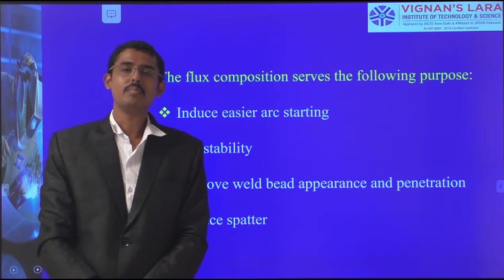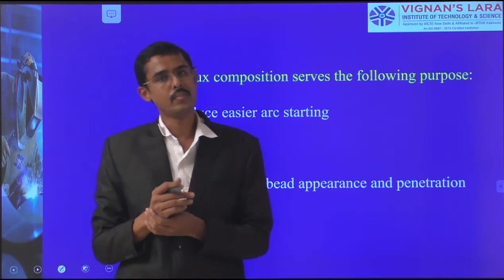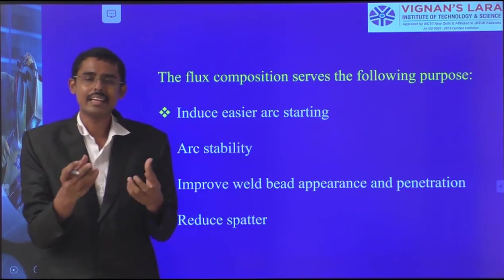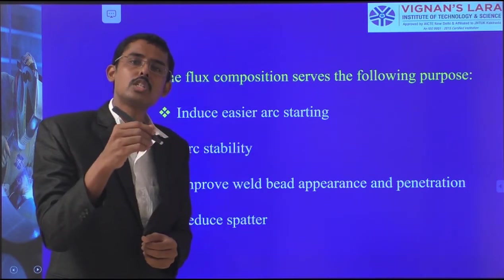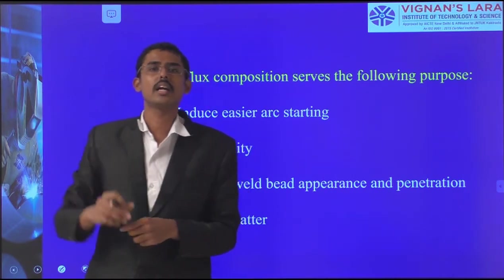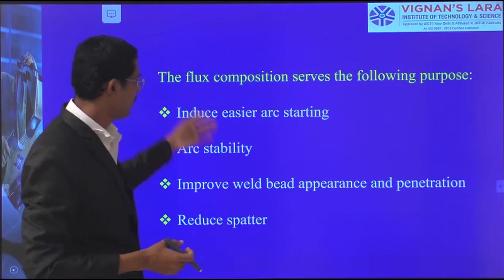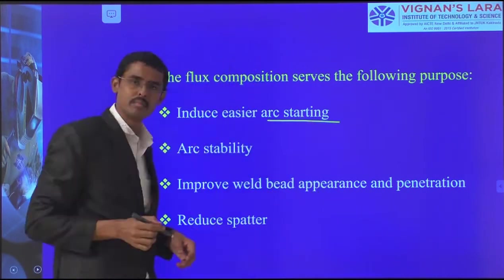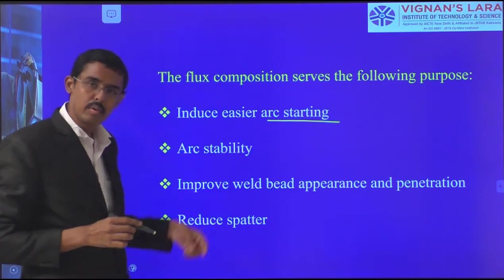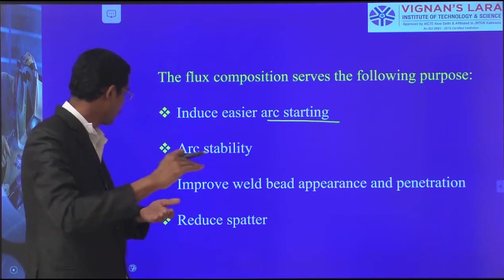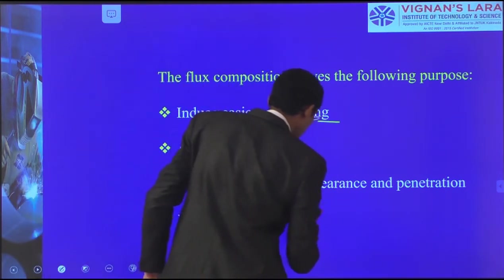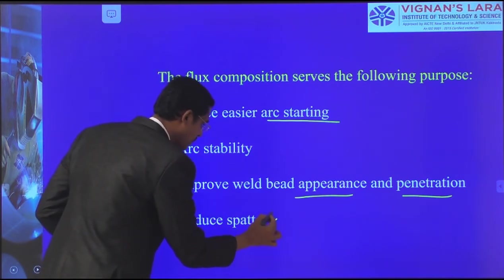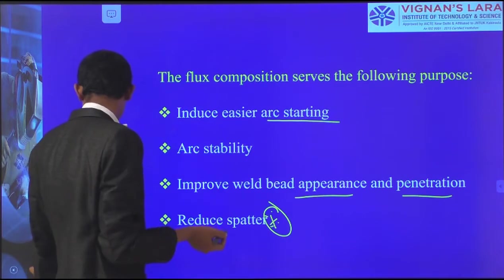Welcome to the session. In the previous classes we have talked about shielded metal arc welding process, its working principles, applications, and advantages. In continuation with that, we have to see about the categories of electrodes. The consumable electrode is categorized into three categories. The function of this consumable electrode, which is coated with flux material, induces easier arc starting by adding iron particles, ensures arc stability, improves weld bead appearance and penetration, enables smooth running of welding, and reduces spatter.